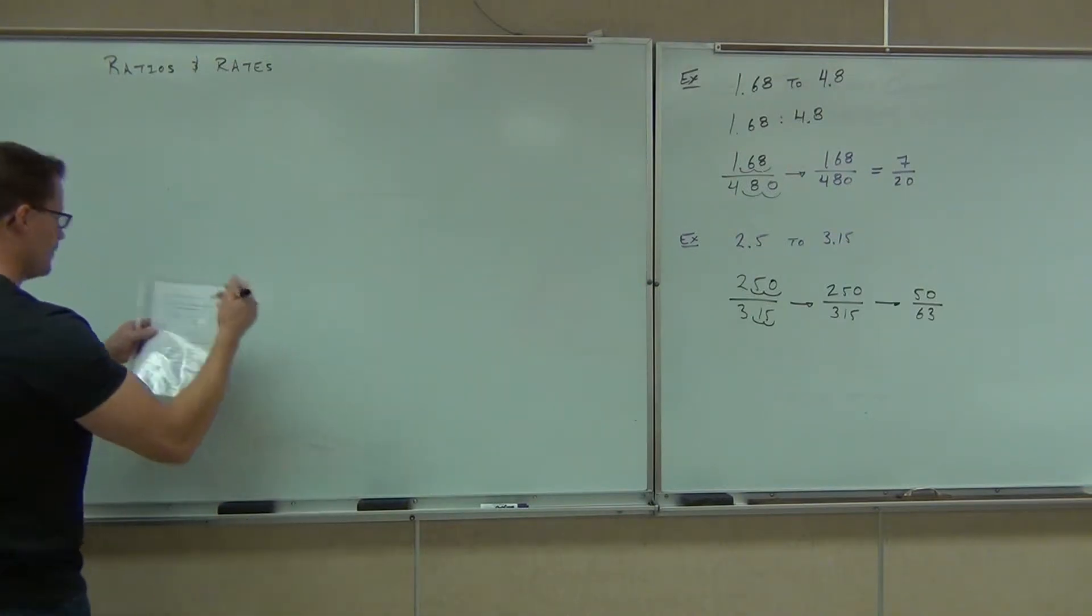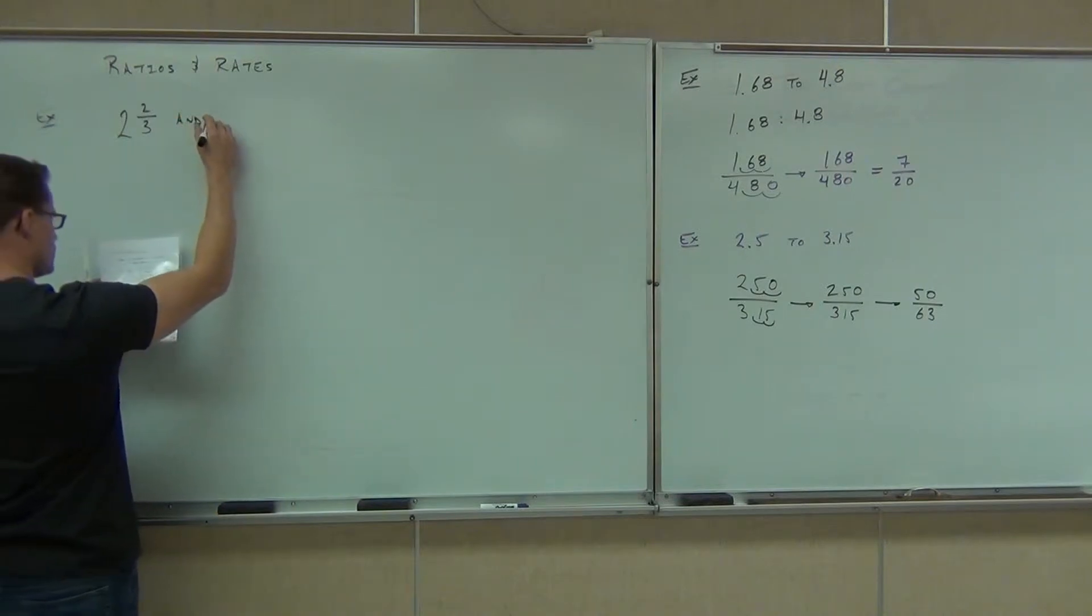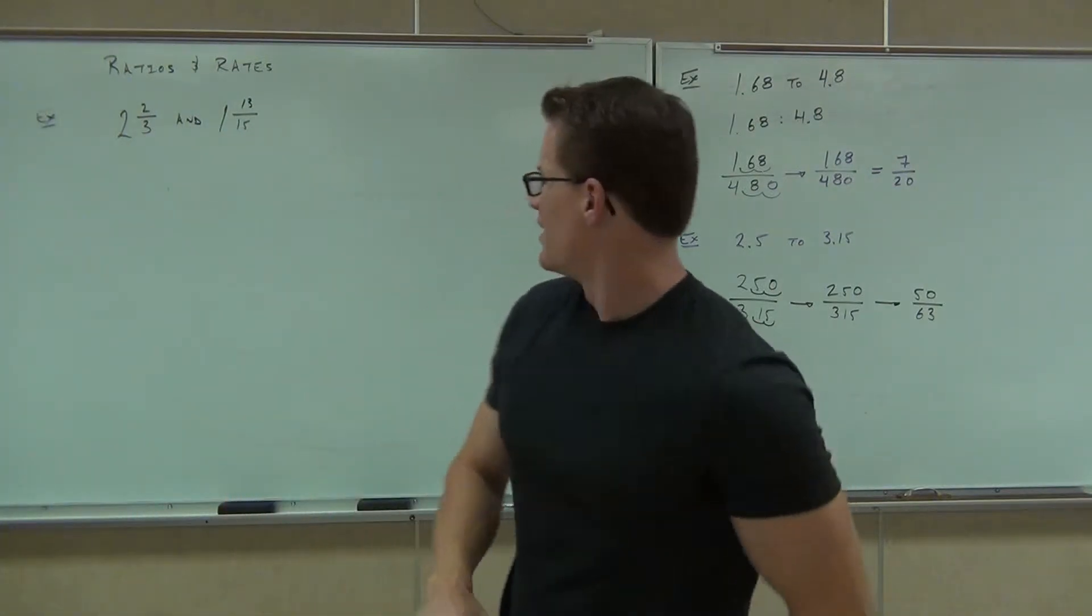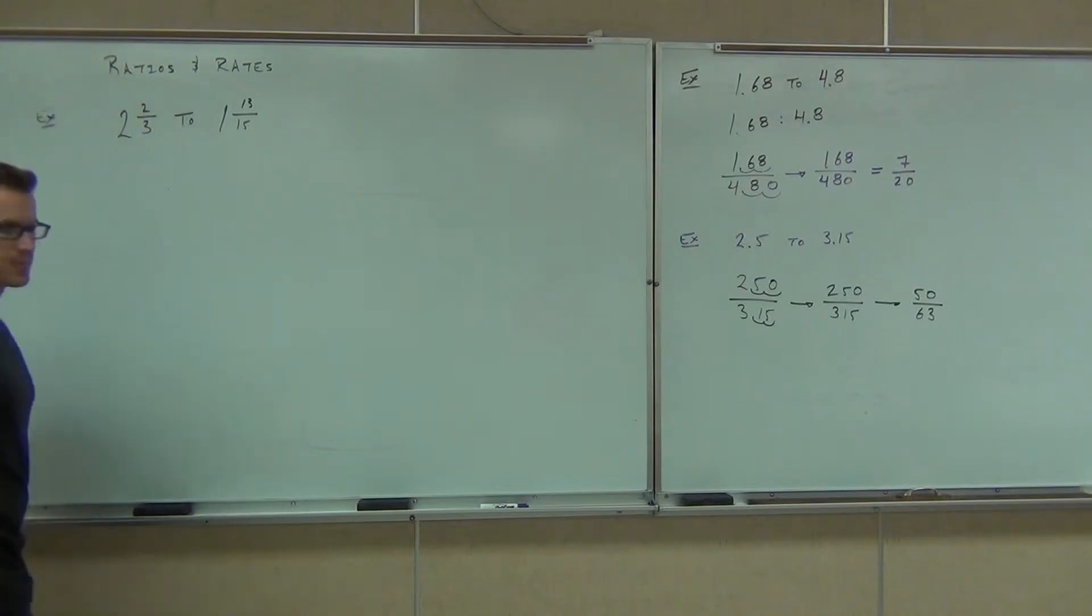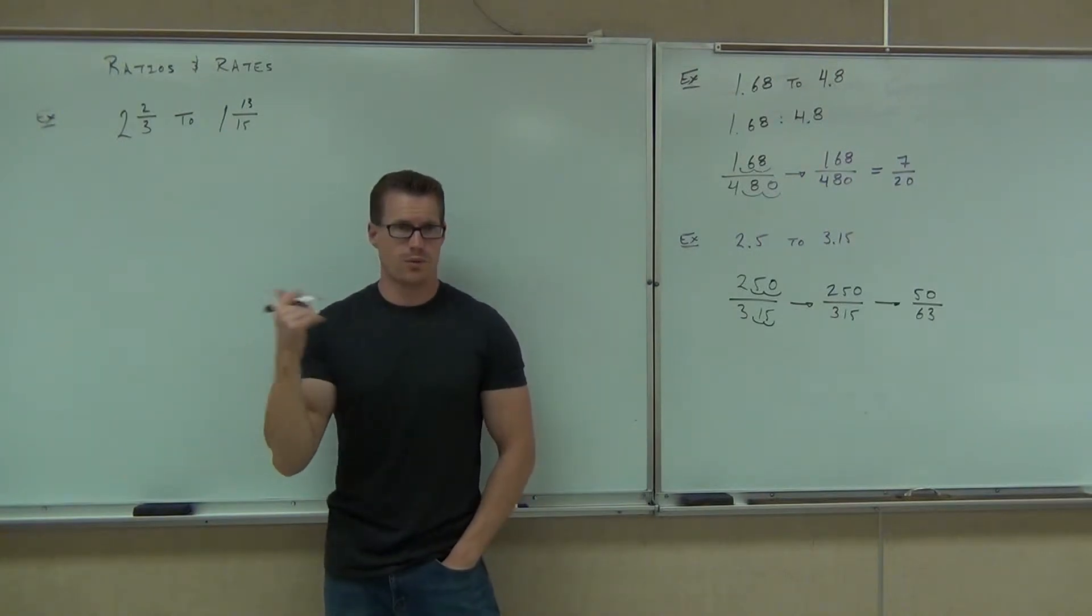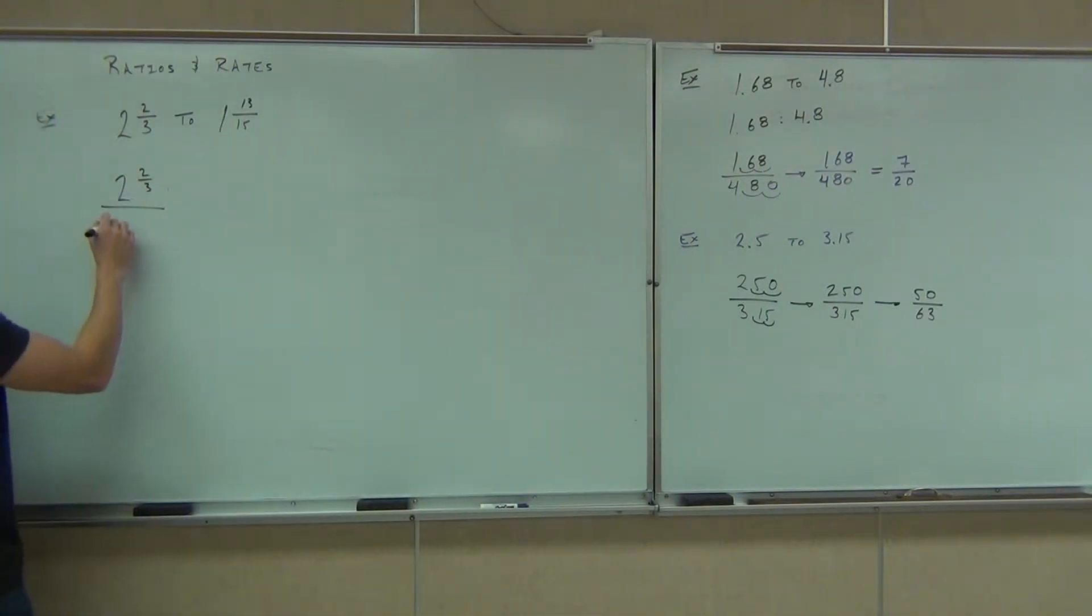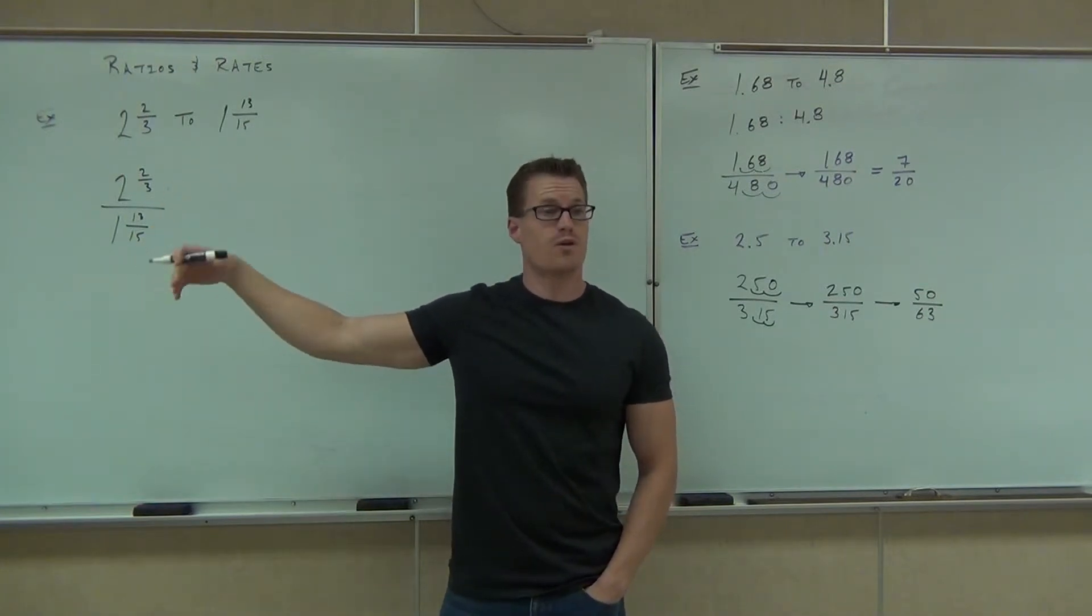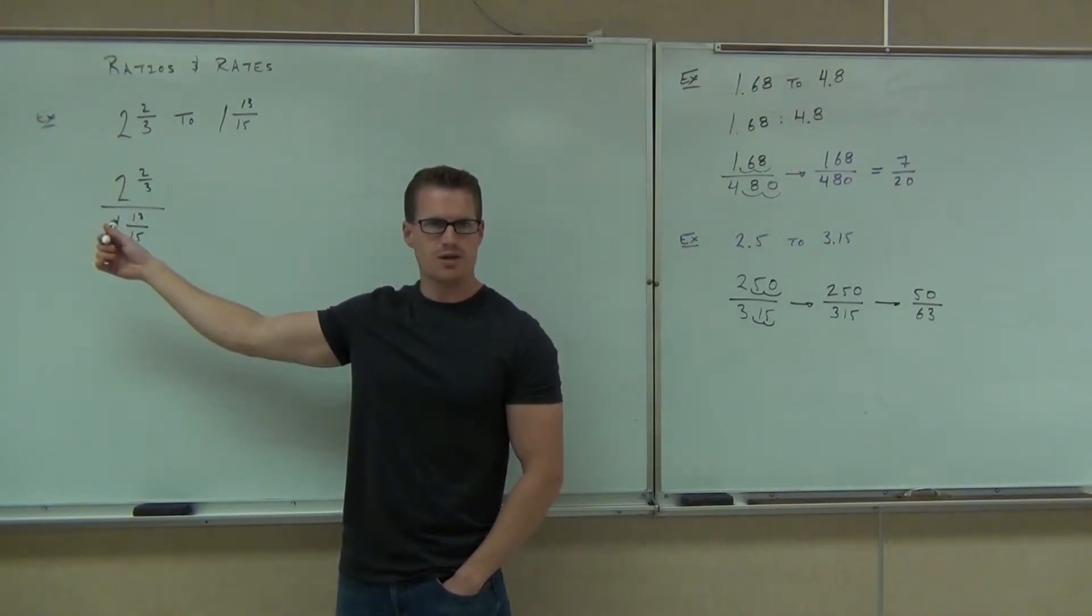So the last type of ratio we're going to deal with, how about if we do 2 and 2 thirds and 1 and 13 15ths? Hey, first things first. Could you set that up as a fraction for this ratio? Yeah. What's going to go on the top? 2 and 2 thirds. Over what? 1 and 13 15ths. Okay, now stick with me. You guys are okay on that, right? First thing goes on top. Second thing goes on the bottom of our ratio. Now, wait a second. Do you guys notice that these are mixed numbers? Can you change them to improper fractions? Yes. Let's do that.